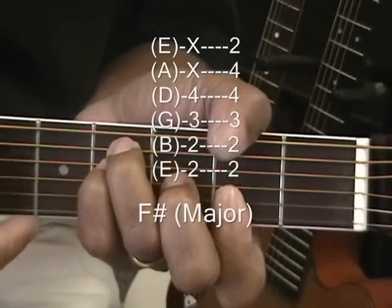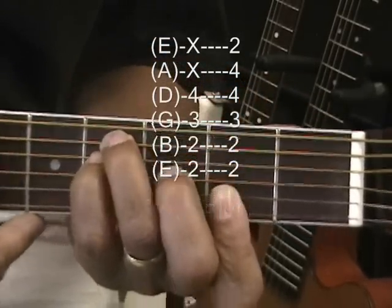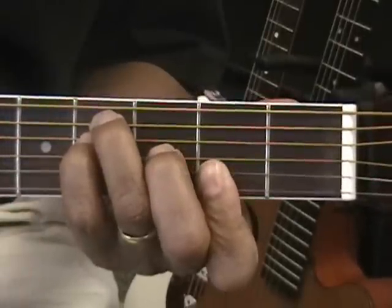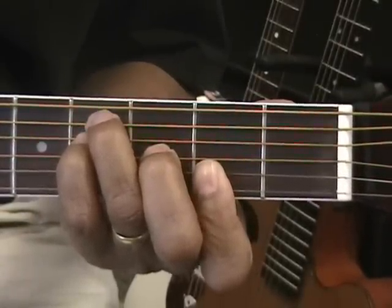Then if you can get your thumb over the top, you've got a nice full chord. If you can't do that, strum it from the A, like that, from the A string. And that's F sharp major.